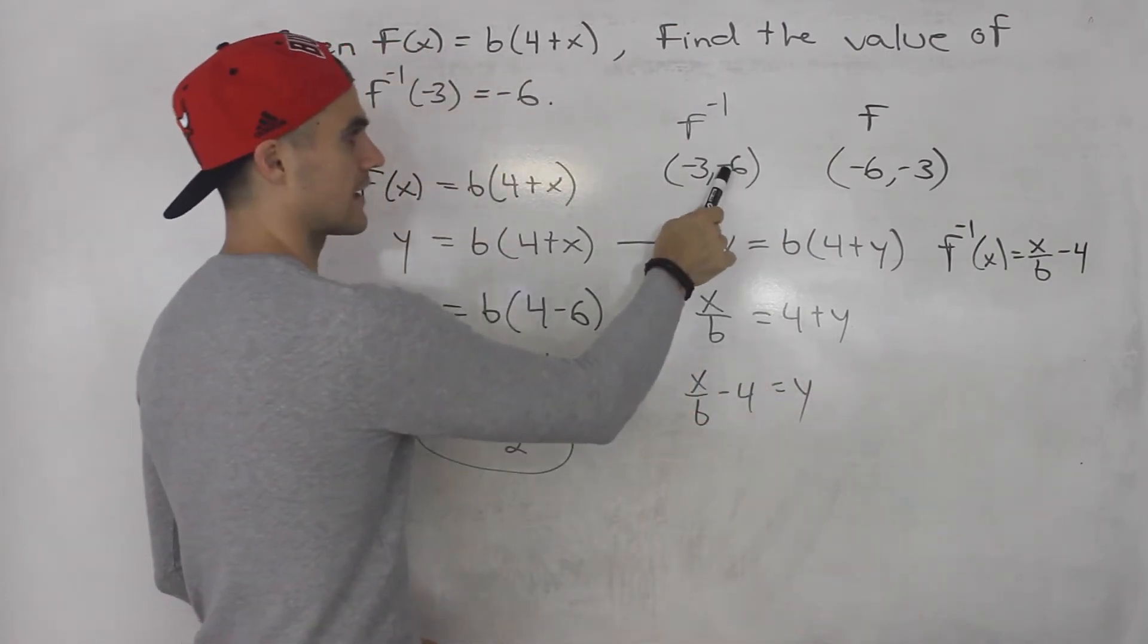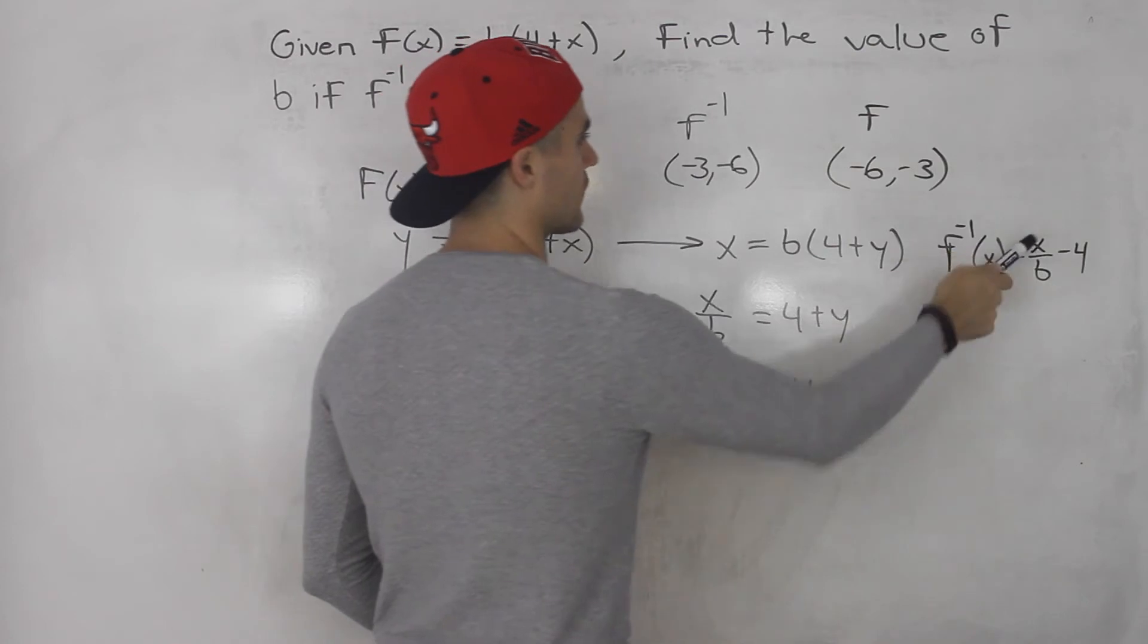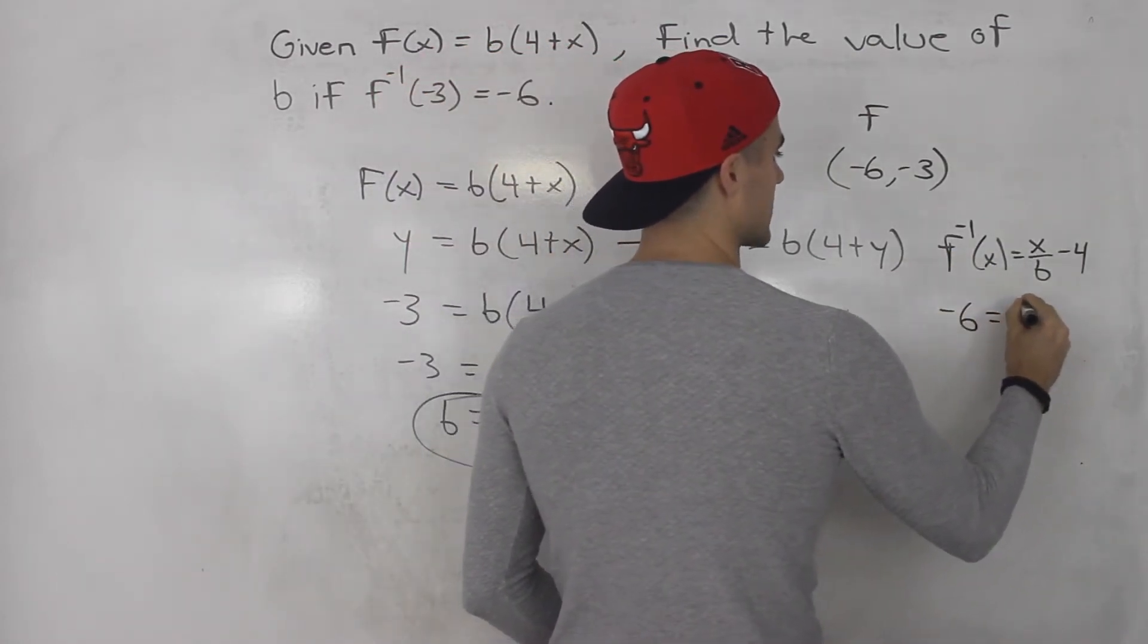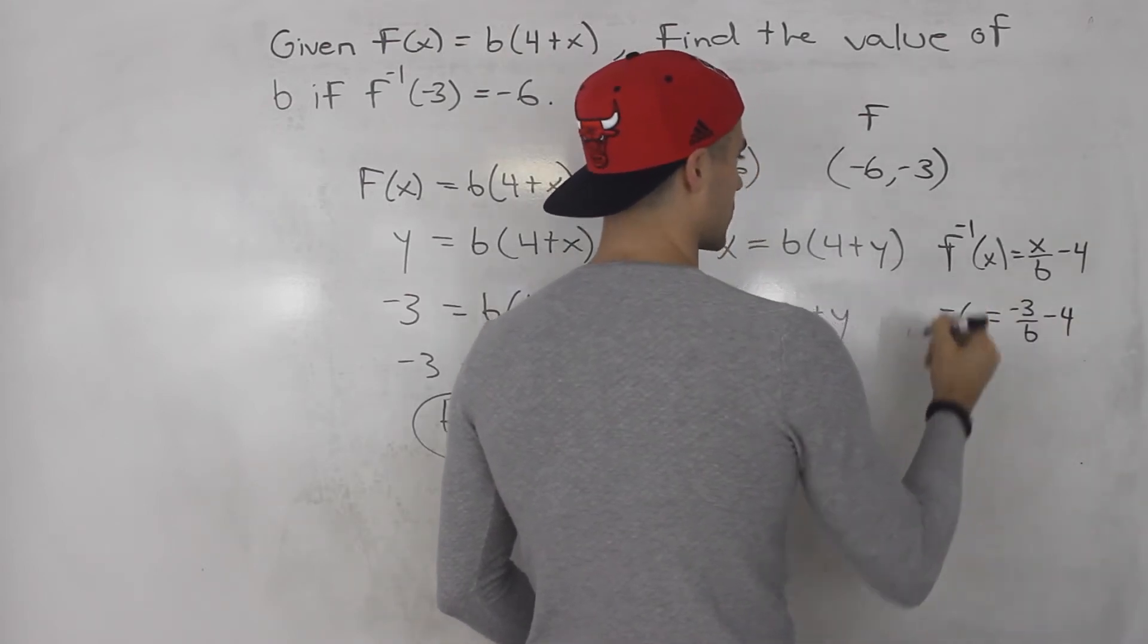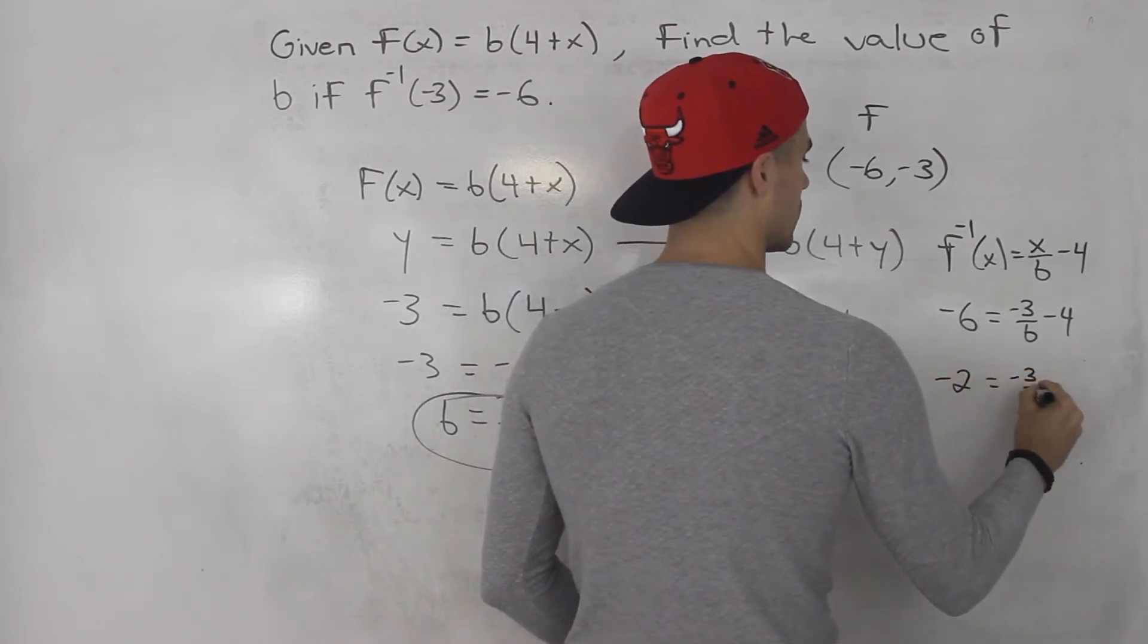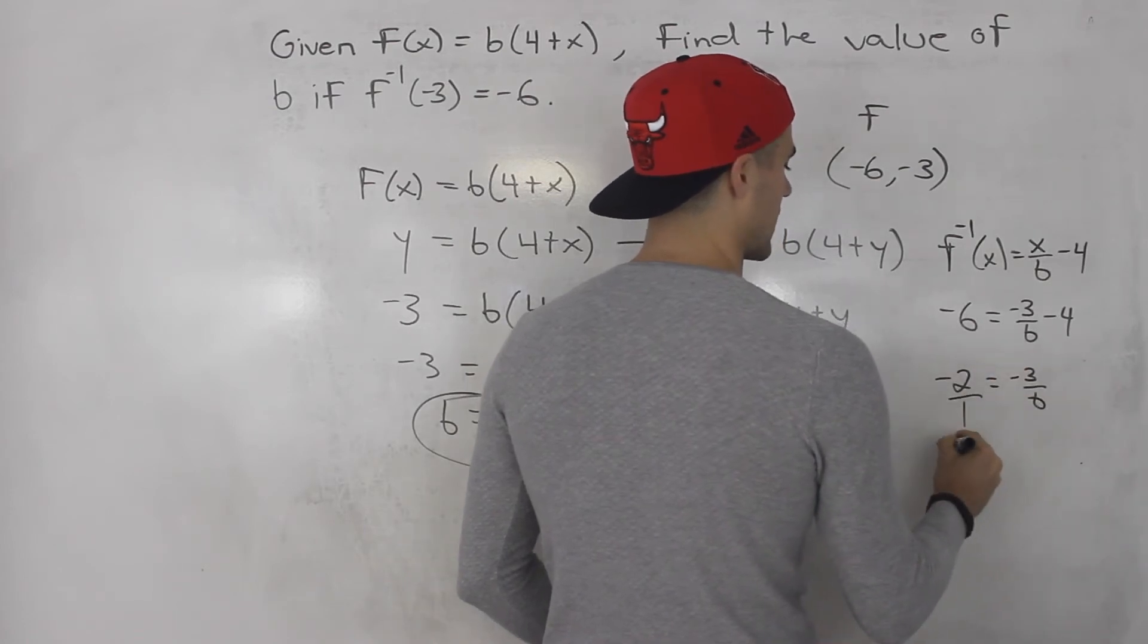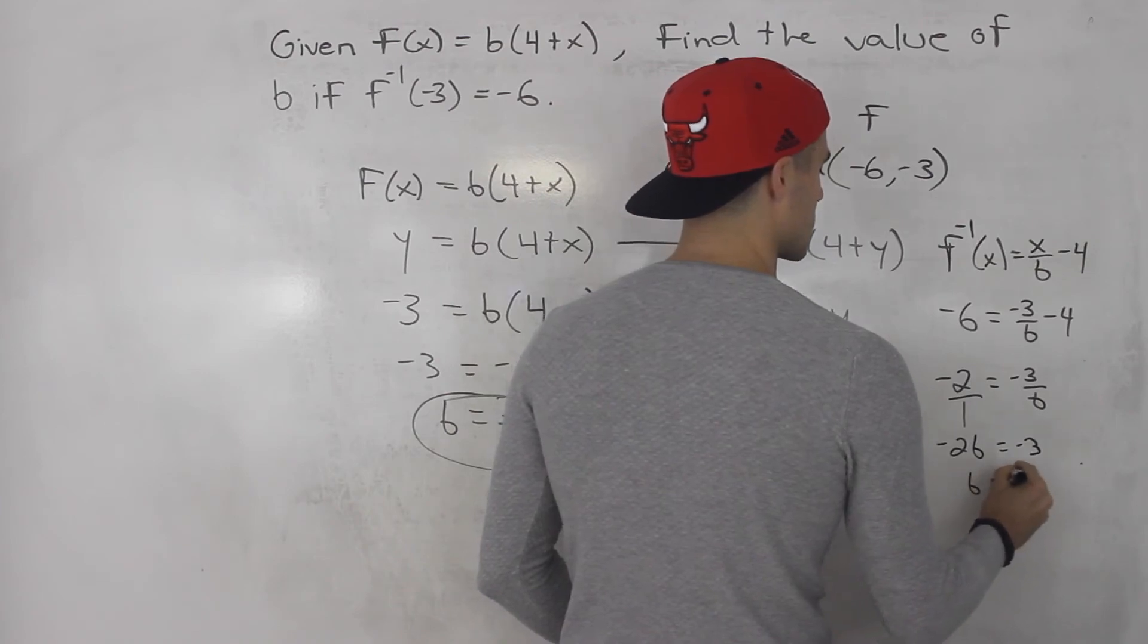And then we could plug in -6 here for the y value of the inverse, and -3 for the x value. So we'd have -6 equals -3/b - 4. Bring the -4 over. So -6 + 4 gives us -2, which is -3/b. Then we can cross multiply. So we have -2b equals -3, so b is 3/2.